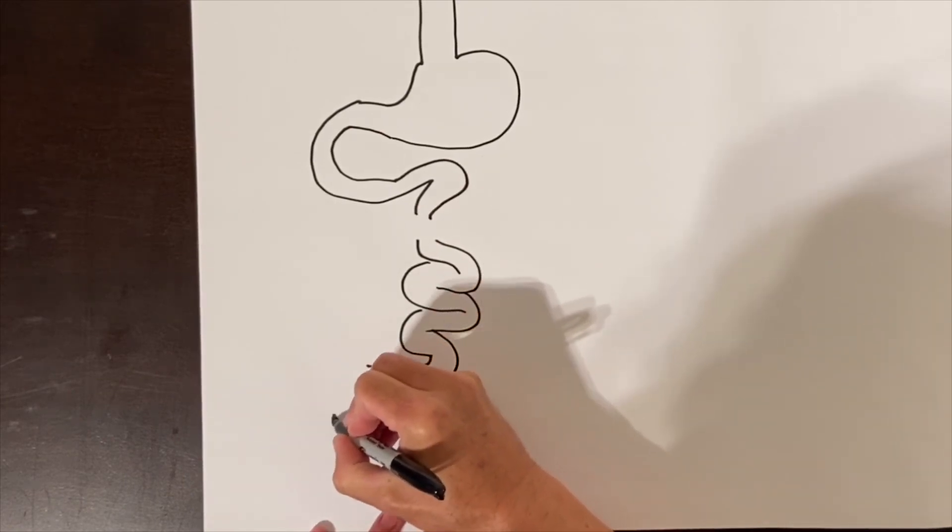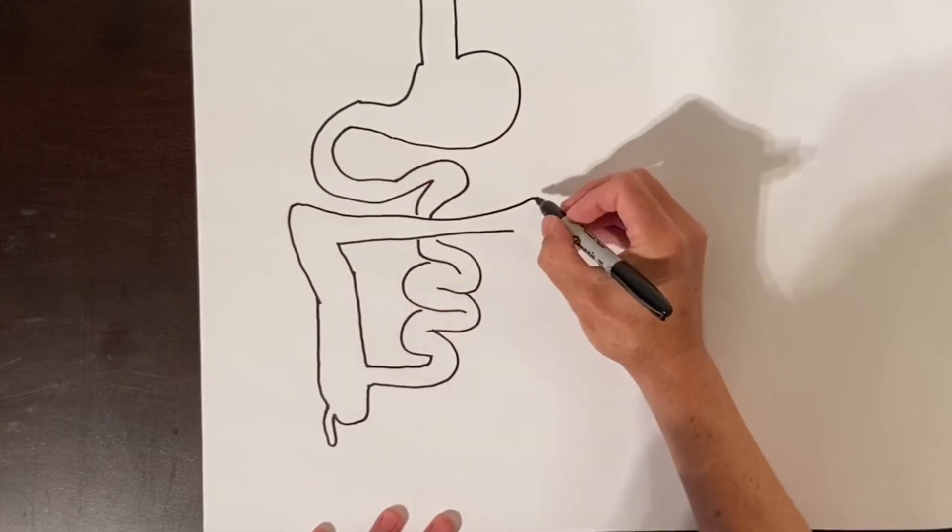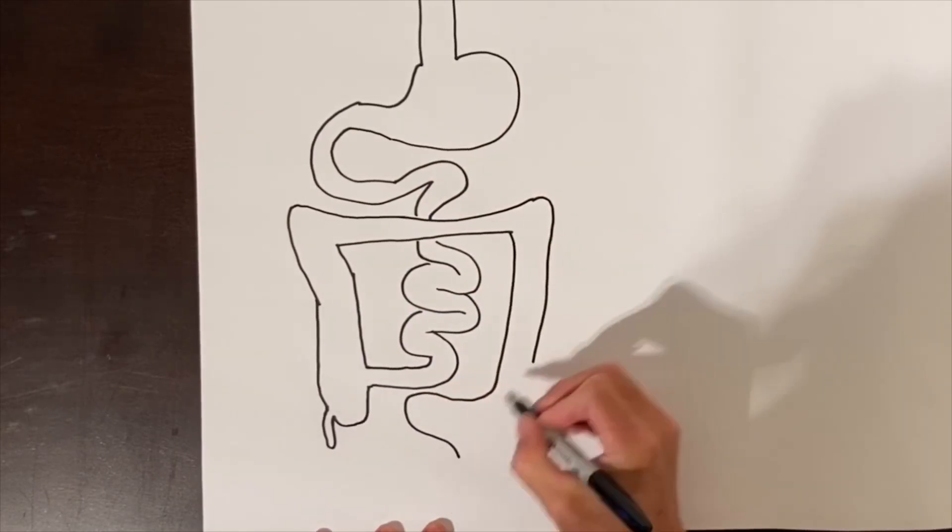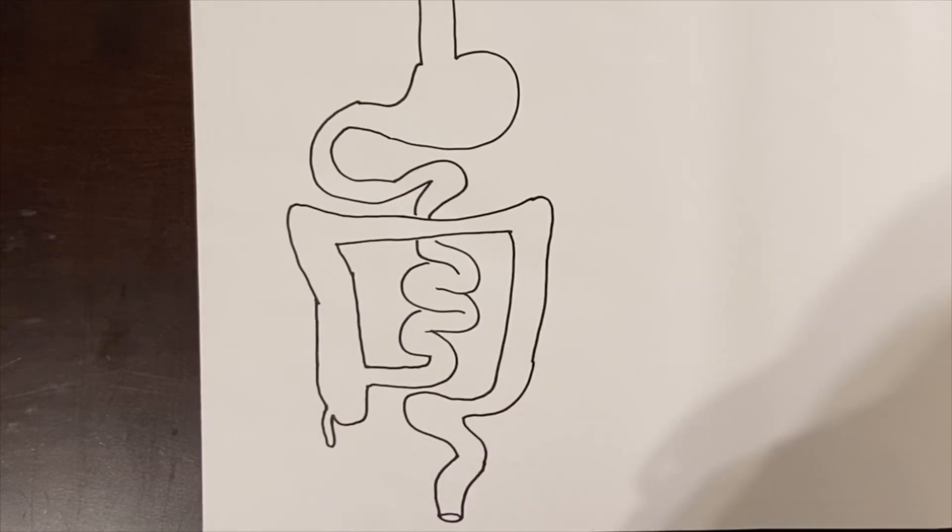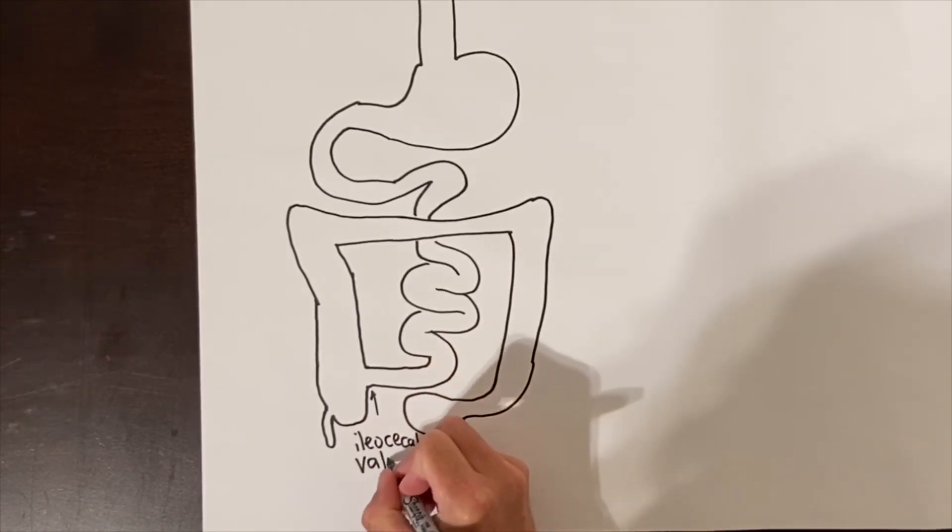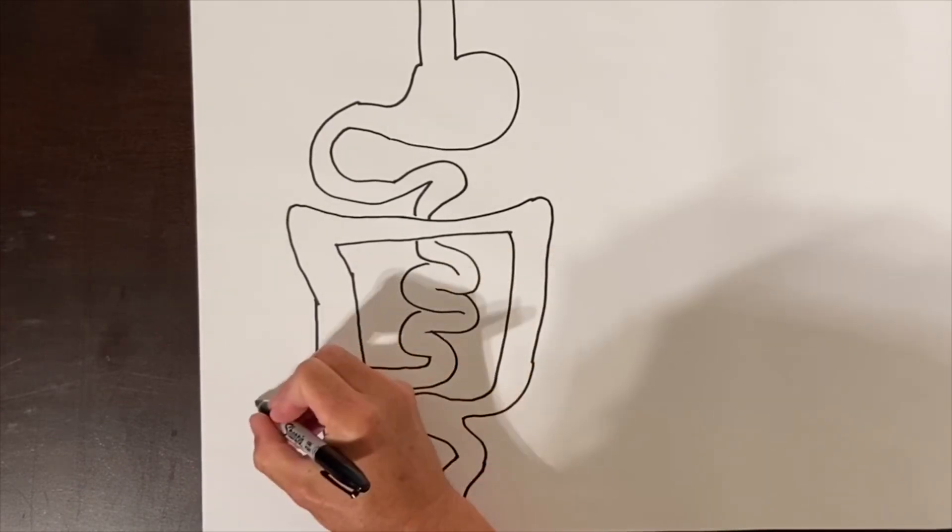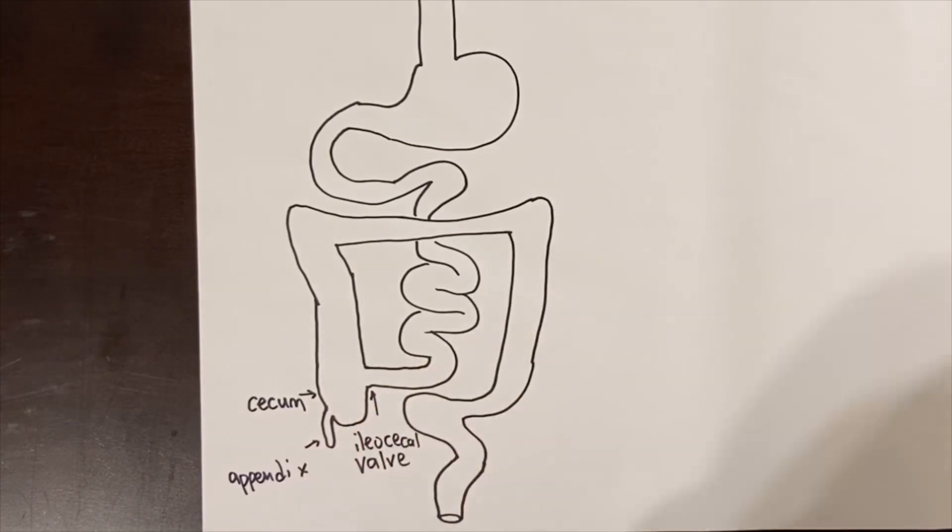The intestinal tract is as follows. Food travels from your mouth through the esophagus into the stomach, then into the small intestine, which loops around and eventually empties into the colon in the right lower abdomen. The valve between the small bowel and the colon is called the ileocecal valve. The very first portion of the colon next to the ileocecal valve is called the cecum, and the appendix is a long hollow outpouching from the cecum.